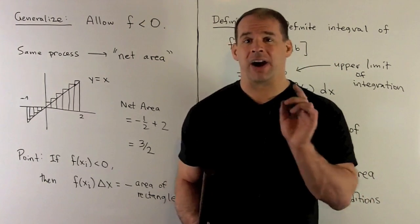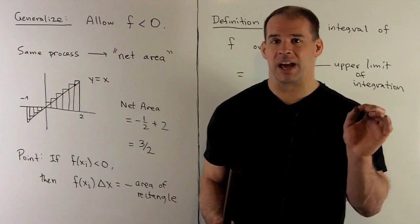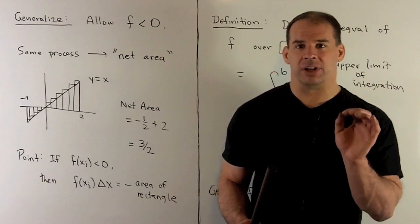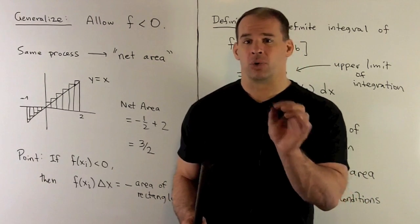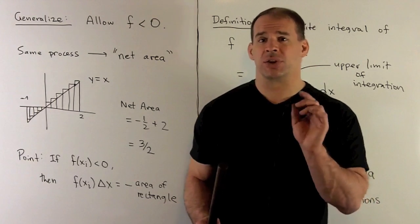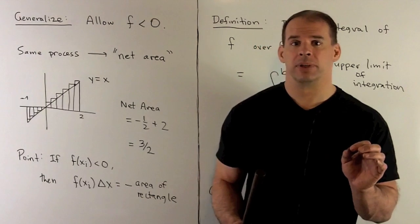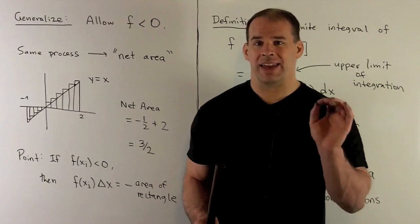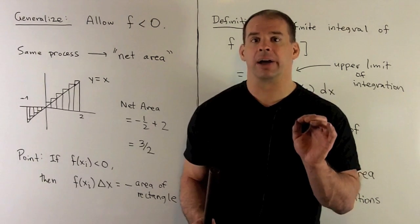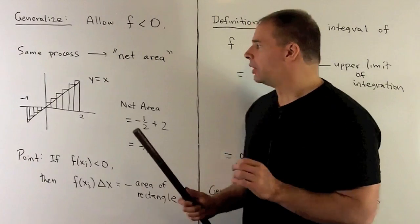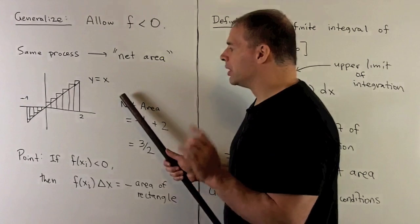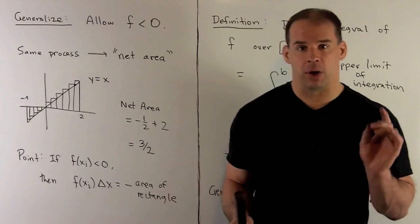The area is going to be the same — it's still base times height — but it's picking up a minus sign. If the graph of f was completely below the x-axis, the process still gives you area except with a minus sign. So if we consider a function that has both negative and positive values, what comes out of the process is a net area — we take all the areas for parts above the x-axis and subtract off all the areas for parts below the x-axis.